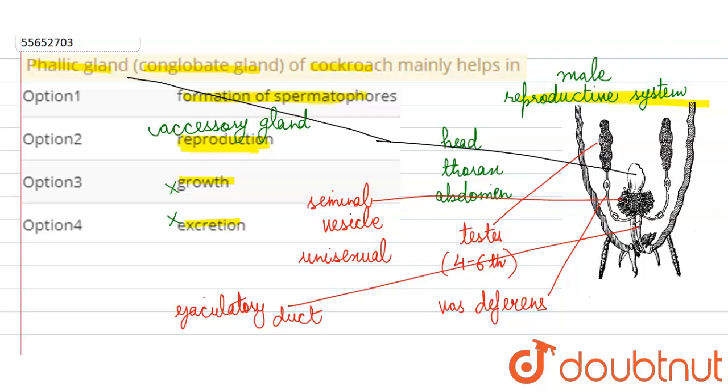Because during copulation in the cockroach, there is mating between male and female. The exchange of sperm occurs through a structure called a spermatophore. We can say that there is a packet-like structure of sperm that a cockroach transfers.